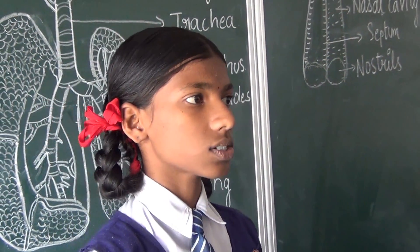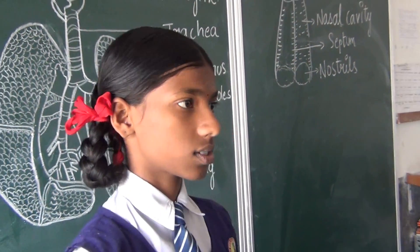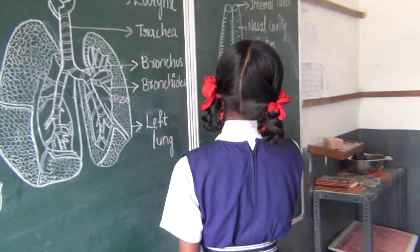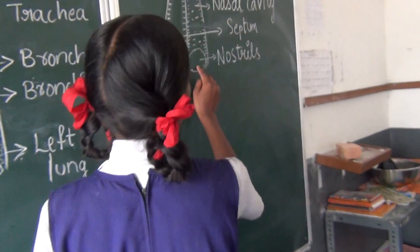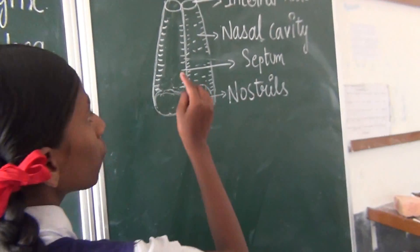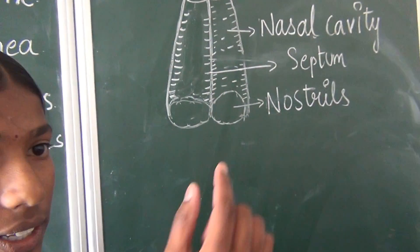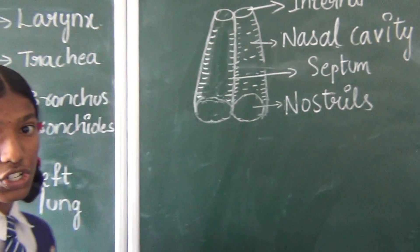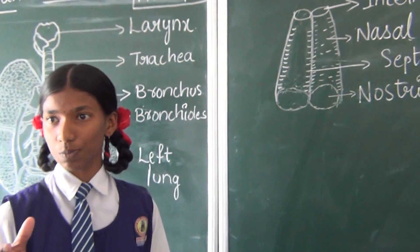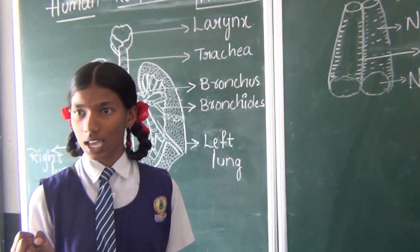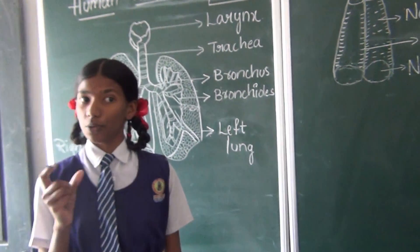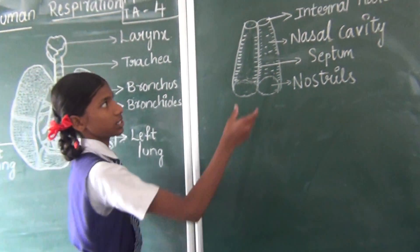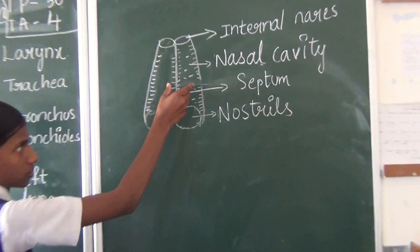First, nostrils. We have two nostrils here. We have a number of hairs inside the nostrils which trap the dust particles and prevent them from entering into nasal cavities.